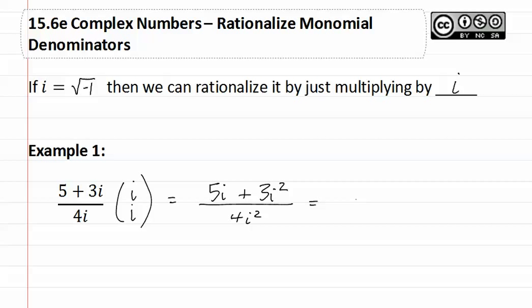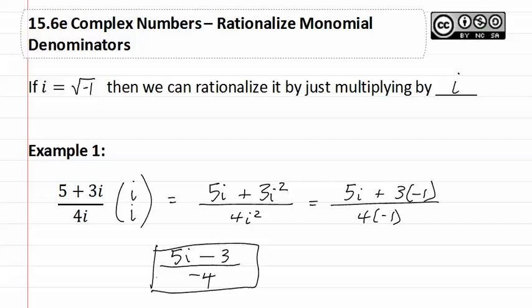Remembering that i squared is negative one, we substitute that in. Then we multiply, giving us 5i minus 3 over negative 4, which is our final answer.